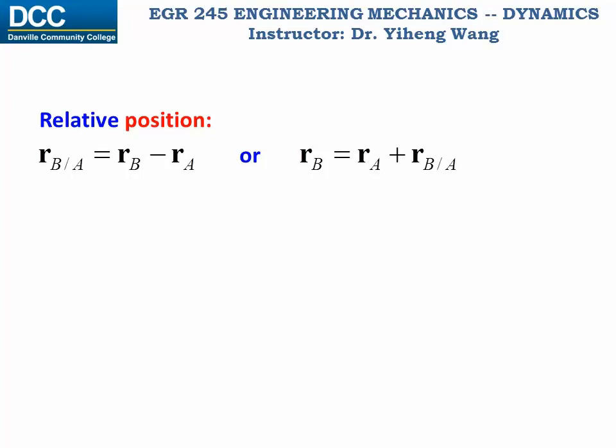And if we take the time derivative of the entire equation, we can get the relation of relative velocity written in a similar format. Be careful though, this is only true because we are using a translating reference frame in which the x prime, y prime, and z prime axes don't change direction with time. It is not true if we are using a rotating reference frame as we will discuss later in this course.